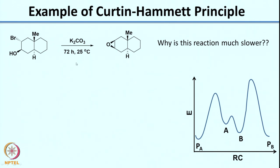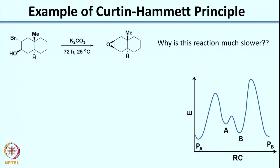Now to understand this, we would need to again write the conformation for this molecule, because the Curtin-Hammett principle involves the two conformers A and B. So let us try to write this. As I told you in the last class, hopefully you have practiced writing the chair form. So if you write the chair form for this molecule...